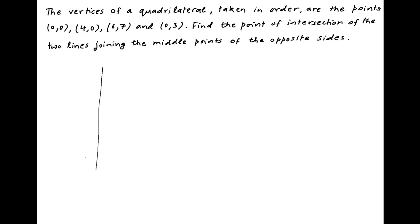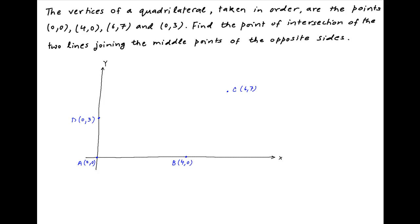Let's start by plotting this quadrilateral on the Cartesian plane. The vertices of the quadrilateral are: the origin, let's denote it by A; the point (4, 0), let's denote it by B; the point (6, 7), let's denote it by C; and the point (0, 3), let's denote it by D. Now we join A, B, C and D to complete the quadrilateral.